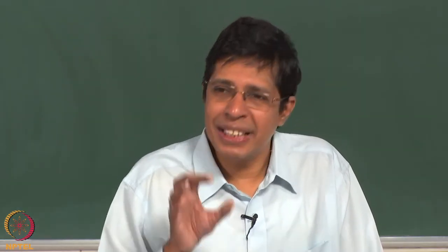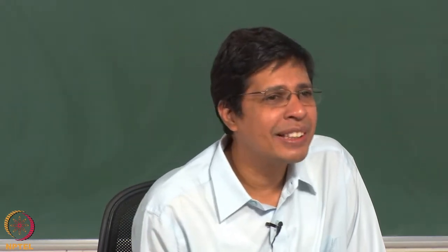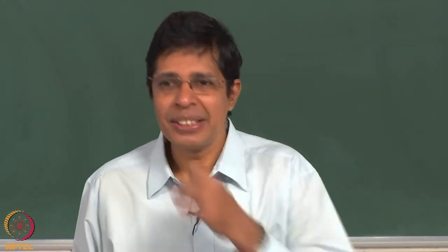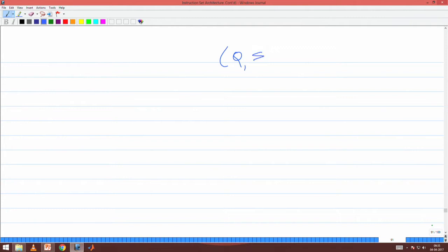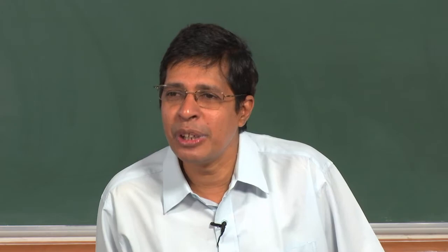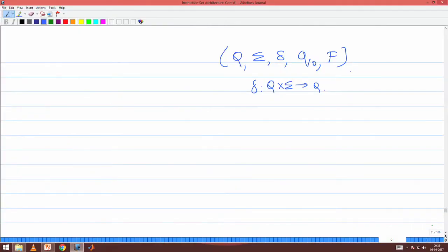Now we will look at the first state machine. How do we define a state machine? A DFA is a 5-tuple: Q, Σ, δ, q₀, F — where Q is the set of states, Σ is the set of alphabets, δ is a transition function from Q × Σ to Q, q₀ is the initial state, and F is the set of final states. This is a precise mathematical definition of a deterministic finite automaton.